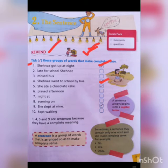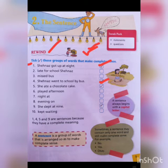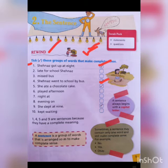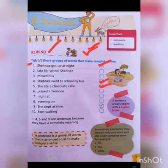The fifth one is: 'She ate a chocolate cake.' As you can see, this also has a complete sense — she ate a chocolate cake. So, I will put a right mark here also.